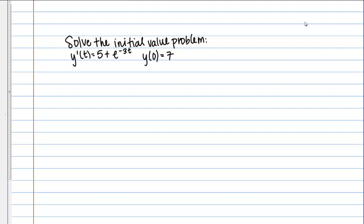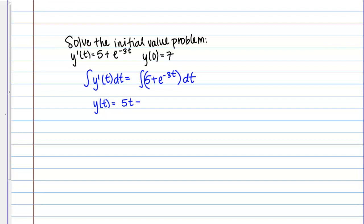The way I'm going to start is exactly the same. I'm going to find an expression for y of t by integrating y prime of t. I know y prime of t equals 5 plus e to the negative 3t. I'm going to integrate both sides of this expression with respect to t. On the left-hand side, that gives me y of t equals 5t plus negative one-third e to the negative 3t, plus C, my constant of integration.